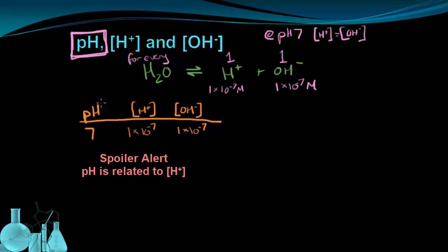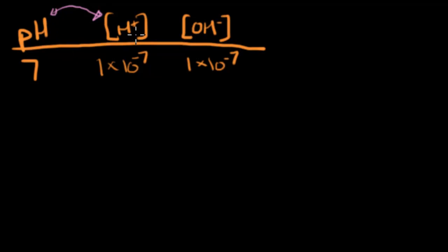But the 1 times 10 to the negative 7th is for both ions. Now I'm going to have a little spoiler alert here. pH, the power of hydrogen, is going to be related to the hydrogen ion concentration. There's some relationship there. So I'm going to go through a few pHs now, and I want you to start looking for a pattern.